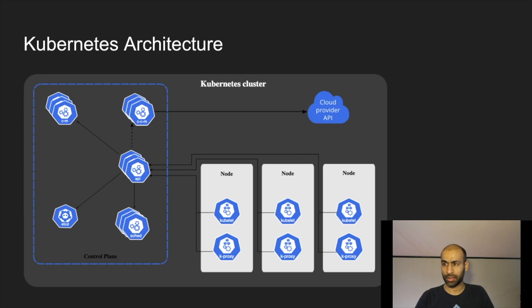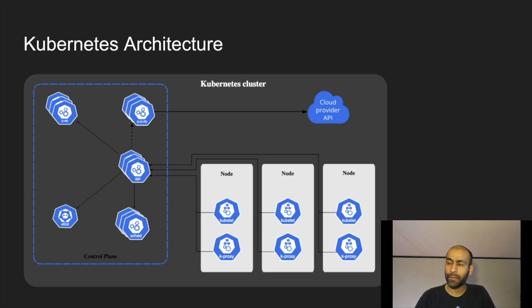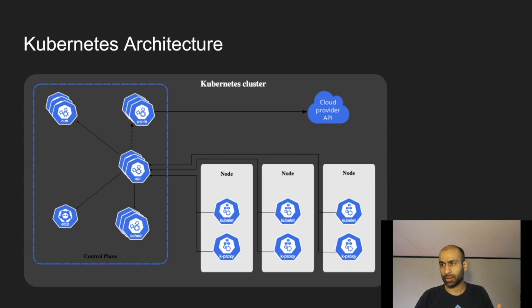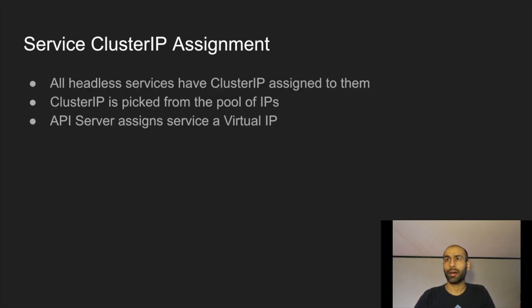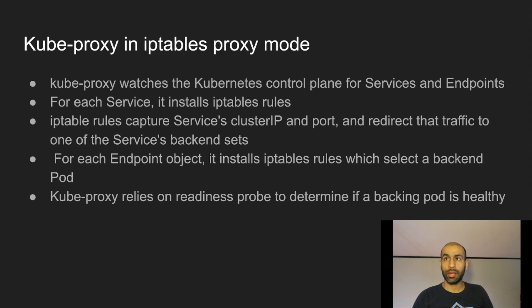Kube-proxy, which runs on the worker nodes, is the actual Kubernetes component that does all the routing. Kube-proxy keeps track of all the services and endpoint objects, and whenever any endpoint objects or service mappings change, it pulls all the information and passes it to the node it's running on. The node then uses iptables to route traffic to one of the pods backing the service. Whenever we create a ClusterIP service, a virtual IP address is picked from the pool of IP addresses and assigned to the service by the API server.